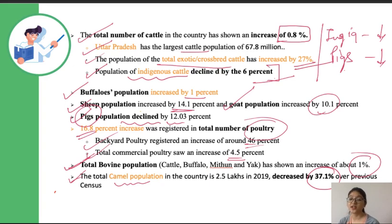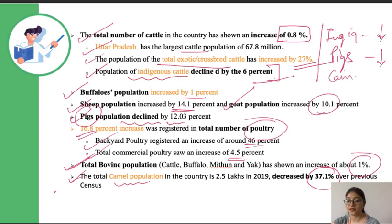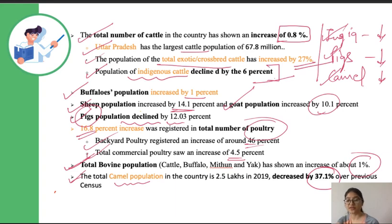There has been a drastic decrement in the total camel population — it declined by 37.1 percent. So to summarize the species that declined: indigenous cattle, pigs, and camels showed a decline. All other species have shown an increment by some figure.